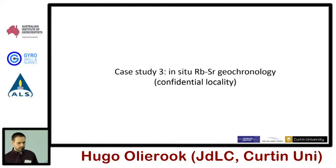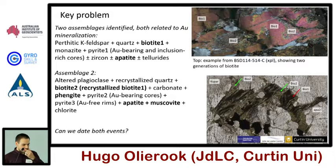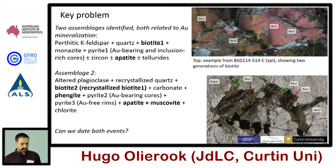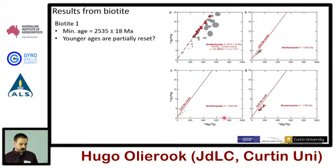The last case study is still confidential in terms of location and client, but in due time that will be made known. This is something quite new — it took us several months to get it to work, but we think we've finally got something reproducible and reliable. The key problem was that we had samples with two distinct assemblages both related to gold mineralization. You can see euhedral biotite grains that have been partly eaten away and breaking down into quartz and another biotite, and we thought: could we date those different biotite generations?